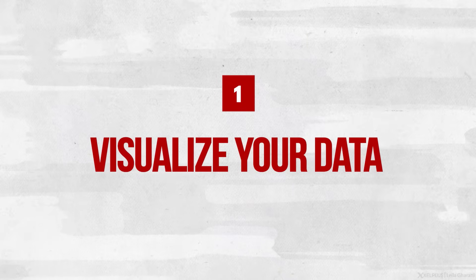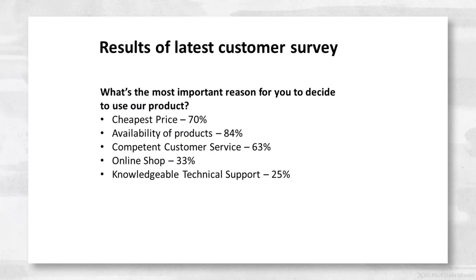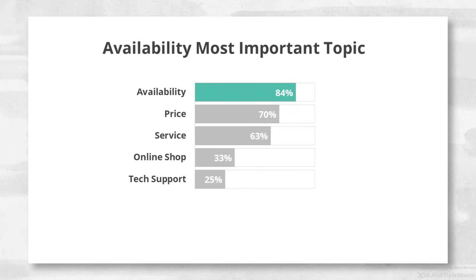Number one: visualize your data. Presenting numbers and data can be a challenge. For one, it's probably not the most exciting topic. And second, if you put a lot of data on your slide, the audience is going to be busy reading the slide instead of paying attention to you. A slide like this encourages the audience to read and try to make sense of the data — their attention is going to be on the slide, not on what you're saying. Instead, you could present it like this. Already from the title of the slide, the audience can get the critical information, and the supporting chart makes it easier to interpret. The important thing is that you guide the eyes to the most important topics and avoid distractions on the slide.